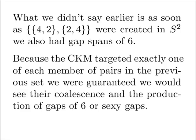What we didn't say earlier is as soon as the pairs were created in S2, we also had gaps of six. Because the composite killing machine targeted exactly one of each member of pairs in the previous set, we were guaranteed we would see their coalescence and the production of gaps of six or sexy gaps.